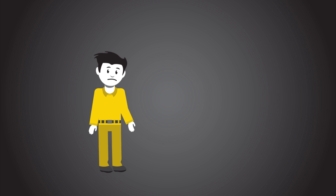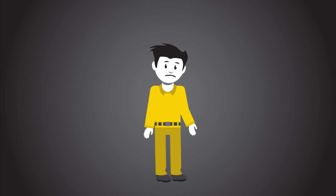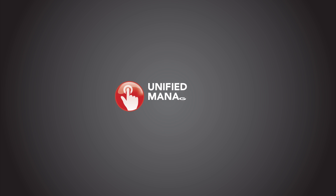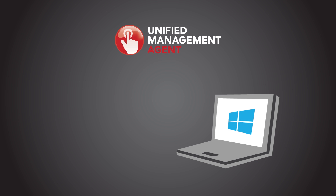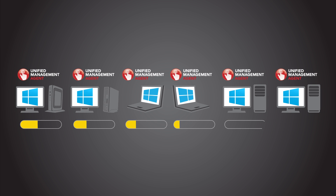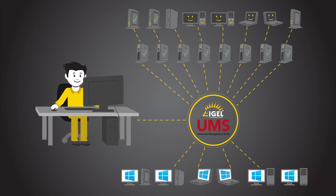So does this mean that you need an additional item of management software? No! Thanks to the UMA, the unified management agent from IGEL Technology, you can even manage devices with Windows Desktop and embedded operating systems via the UMS. Simply purchase one license per device, install the software, integrate it into the UMS, and manage all devices in a centralized, standardized manner as usual.